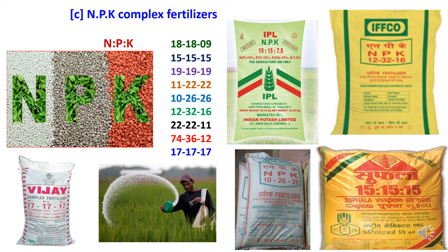The third kind of complex fertilizer is NPK complex fertilizers, containing three nutrients — nitrogen, phosphorus, and potassium — in different proportions. Different variants available in the market include 18:18:18, 19:19:19, 15:15:15, 15:15:19, 19:19:11, 22:22:10, 26:26, 12:32:16, 22:22:11, 7:43:6, 12:17:17:17. These fertilizers are used according to the suitability of the soil for different crops.